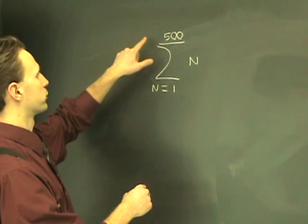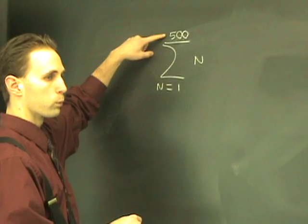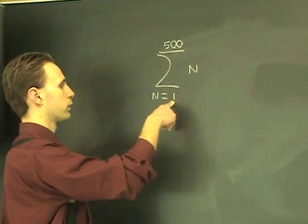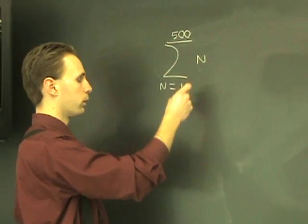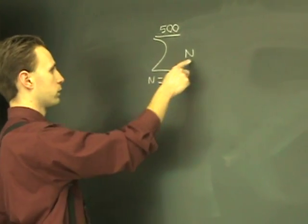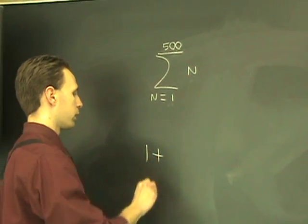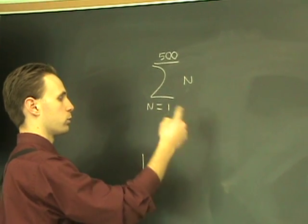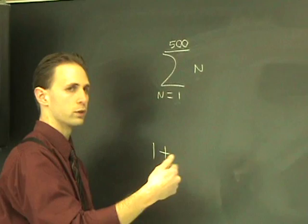It's read the sum of n from n equals 1 to n equals 500. Now what you do to evaluate this is you plug in this number to whatever the expression is. That's the lower limit, 1. And then you re-evaluate the expression at that number, and so on and so on.